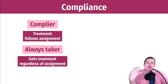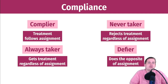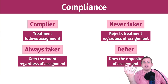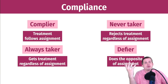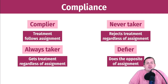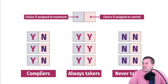Never takers are the opposite of always takers — they reject the treatment regardless of assignment. If you assign them to treatment they won't use it; assign them to control, they also won't use it. Finally, defiers do the opposite of whatever they're assigned to: assigned to treatment, they won't do it; assigned to control, they will. Defiers are like the toddlers of causal inference.